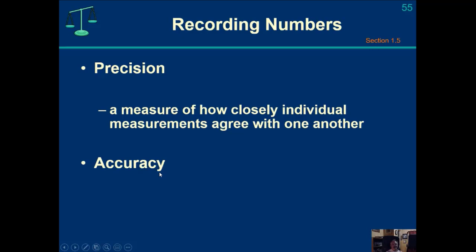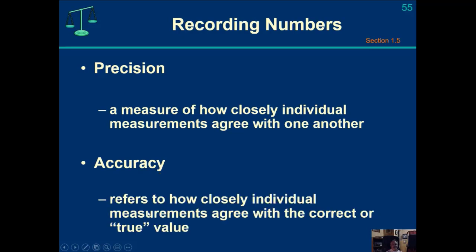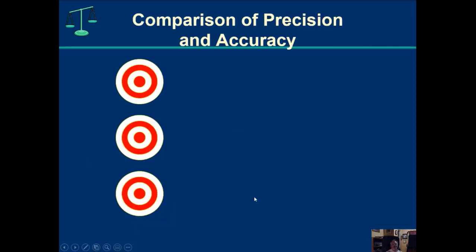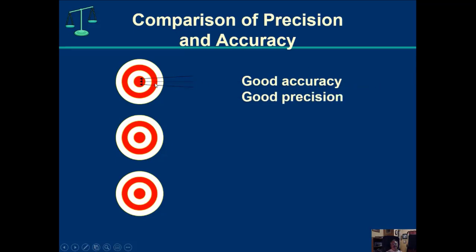You can also have accuracy. Accuracy refers to how closely individual measurements agree with the correct or true value. An easy way to think about this: shooting arrows at a bullseye target. If I have good accuracy, I'm hitting the target. If I have good precision, each arrow lands in approximately the same place.